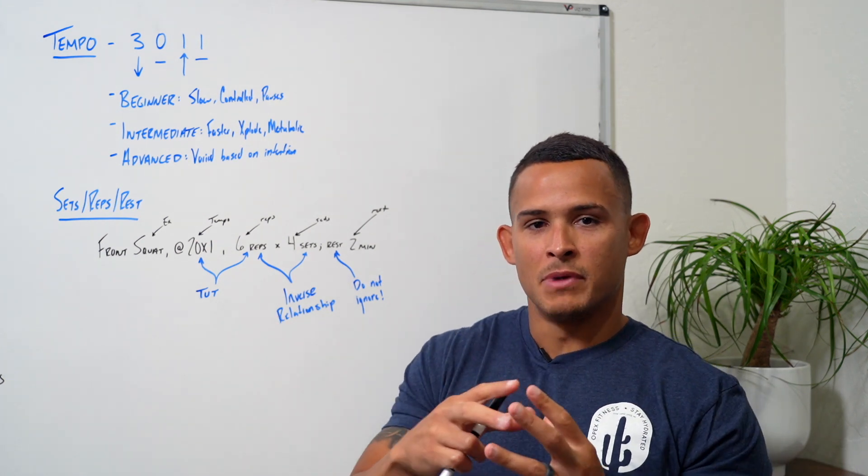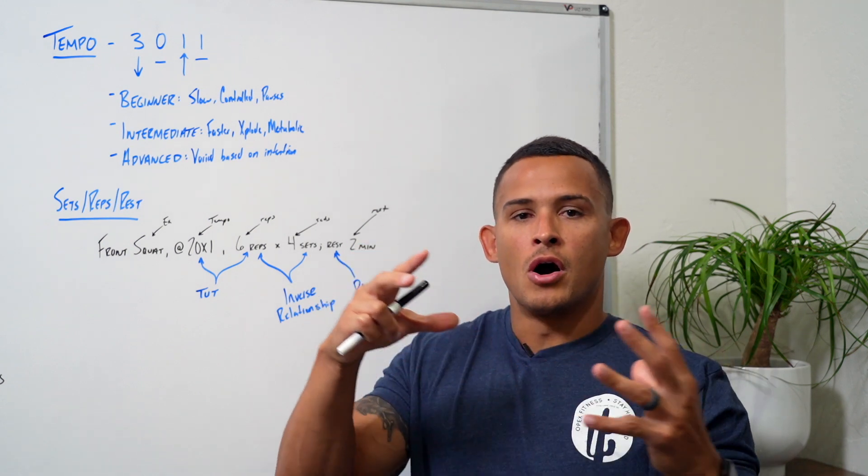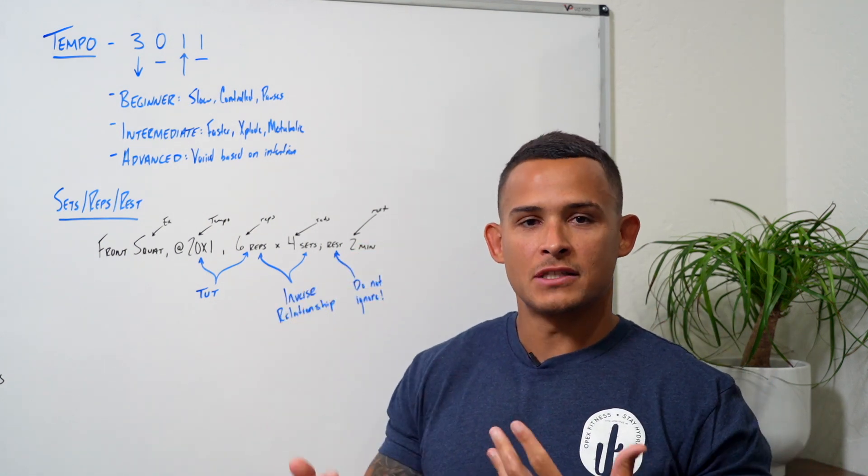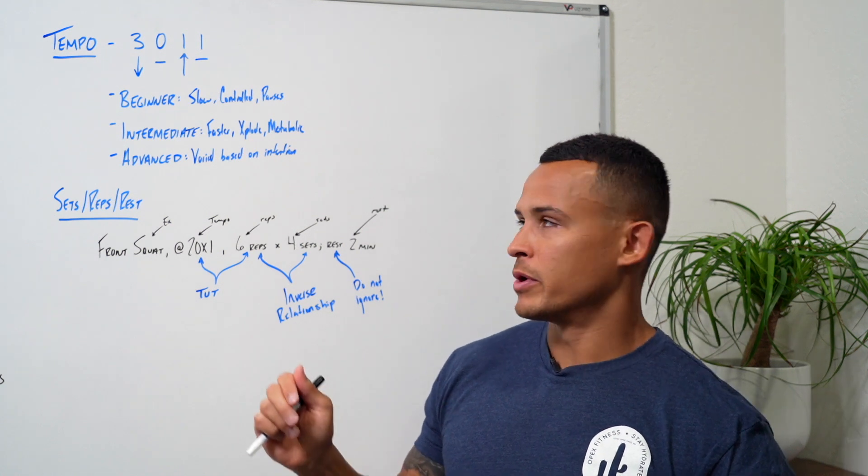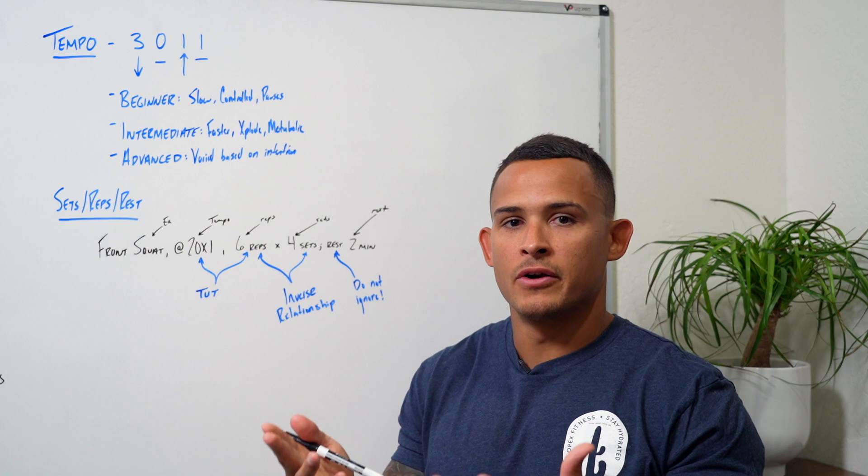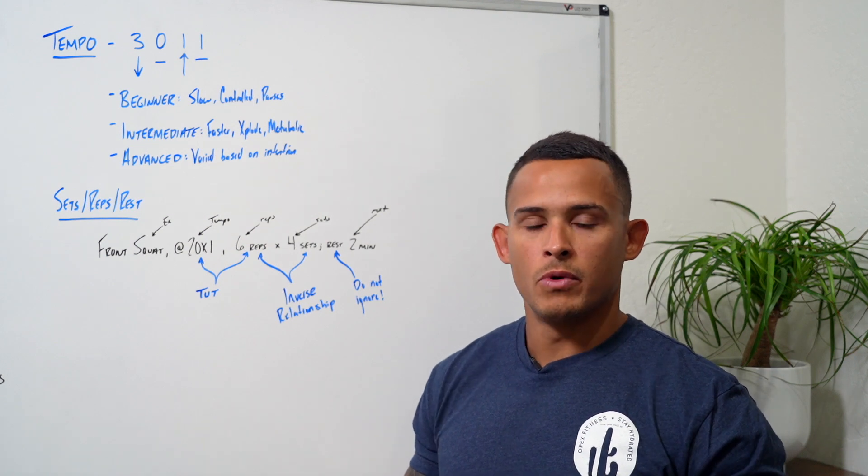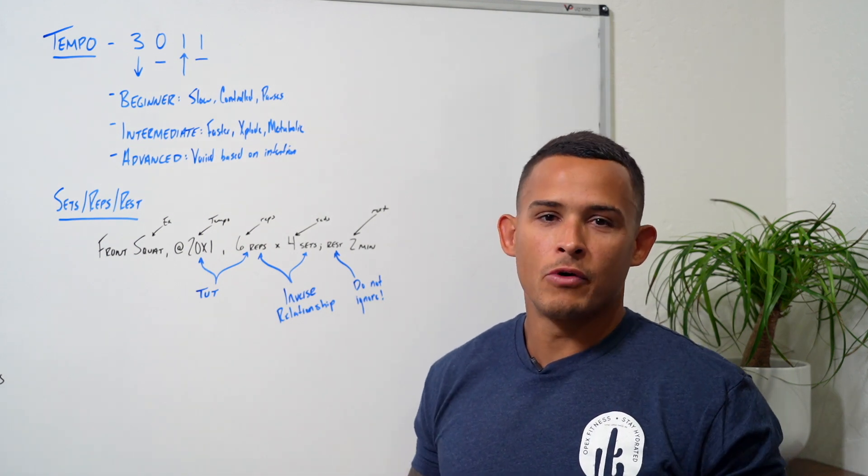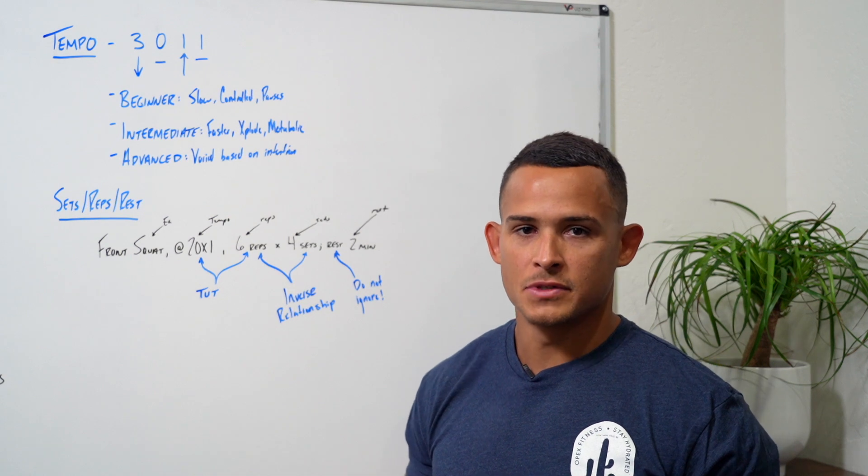When that elongation happens, that's where learning occurs. So in motor control, for a beginner, it makes sense to make eccentrics very slow, very controlled. When motor control is gained, we can now afford to go a little bit faster in those eccentrics.